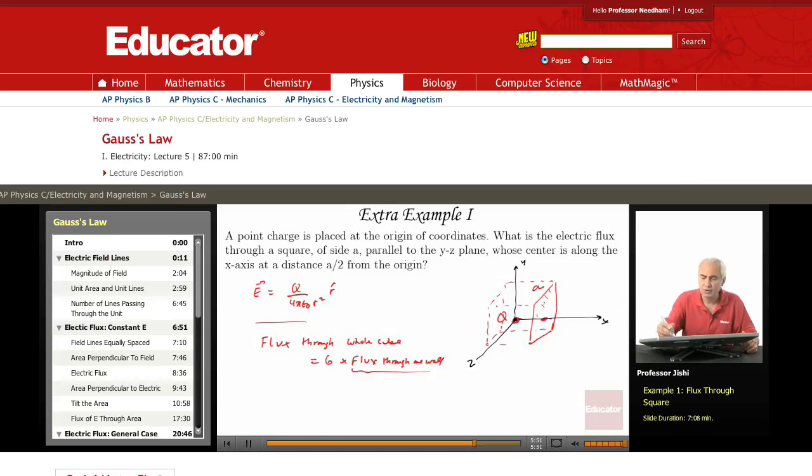So the flux through one wall, phi, is just through one wall, is just the flux through the cube divided by six.